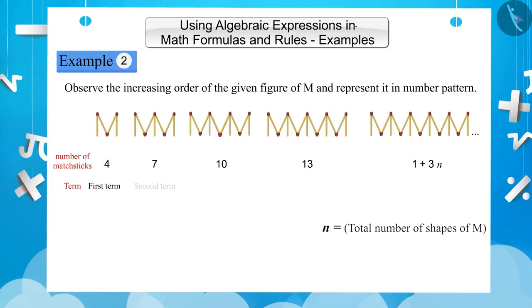Where the first term is 4, the second term is 7, the third term is 10, the fourth term is 13, and similarly the nth term will be 1 plus 3n.